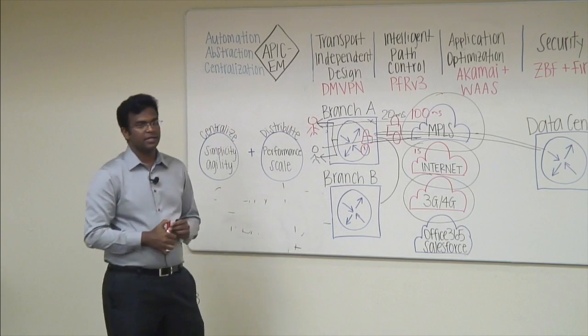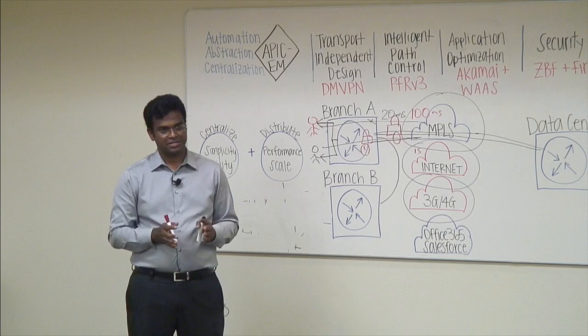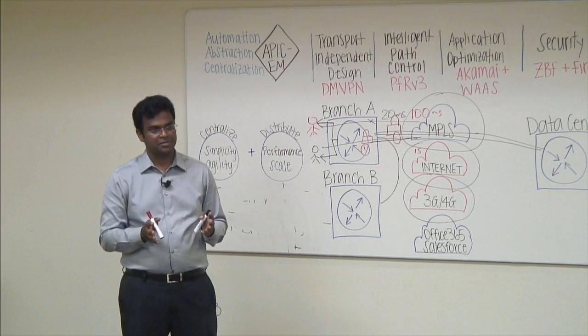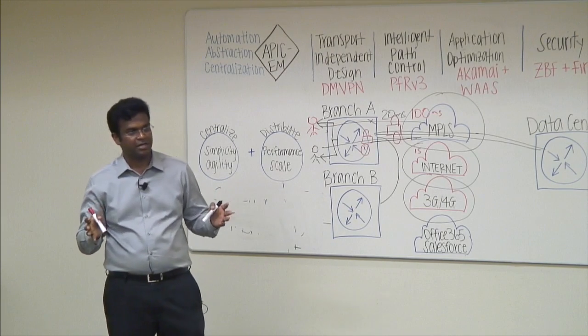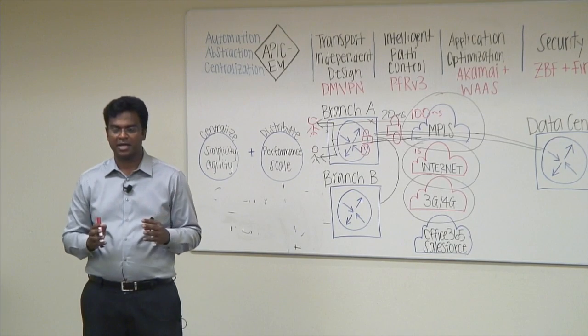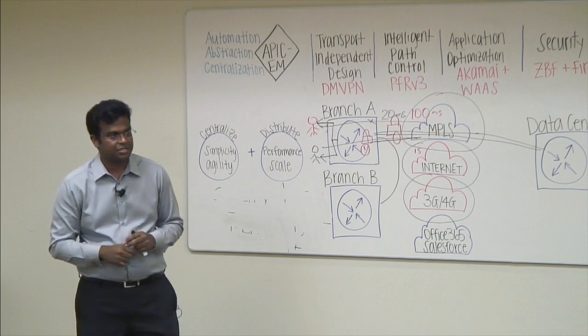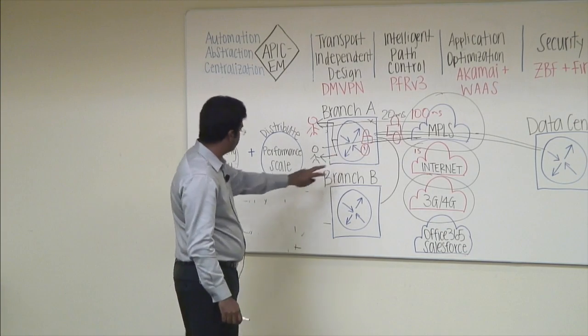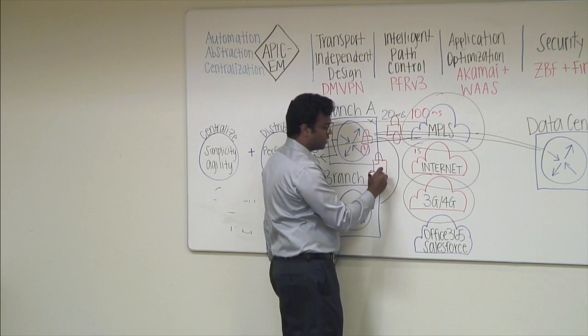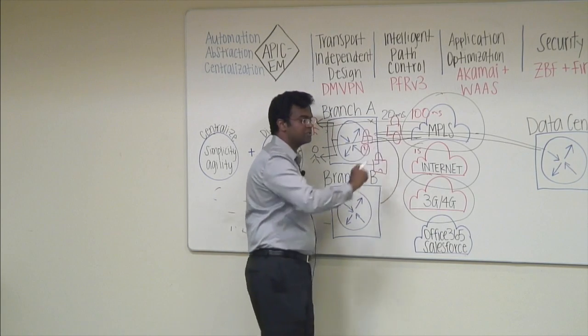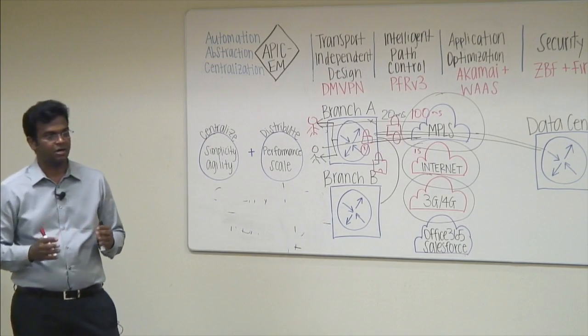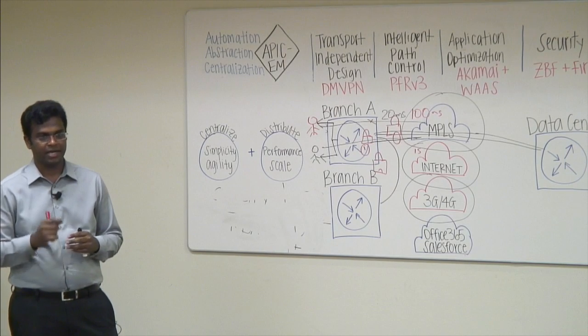The third key aspect is how do you secure the entire branch? When we talk about leveraging internet or commodity transports, you're exposing it to the internet. It's not just about the transport or the device, it's about the entire branch. What we do, and we completely automate this using our controller, is we lock down this entire branch and just allow a tunnel coming out of this branch. Everything else, zone based firewall is enabled and everything is locked down so nothing comes in and everything else is dropped except the tunnel.